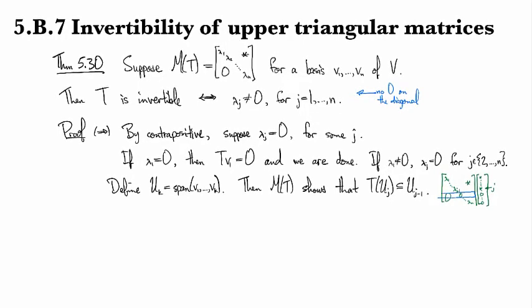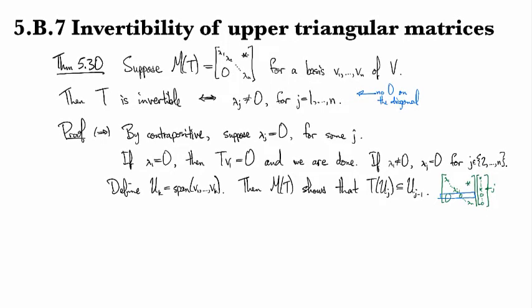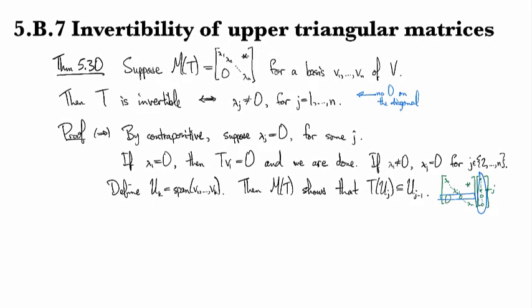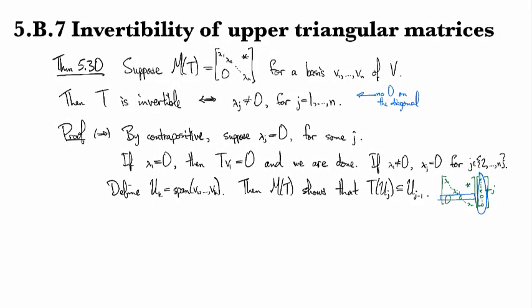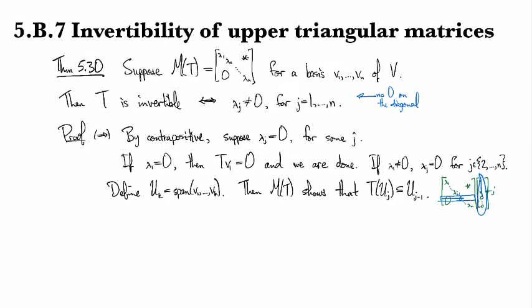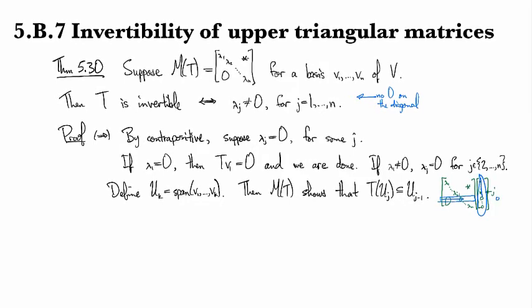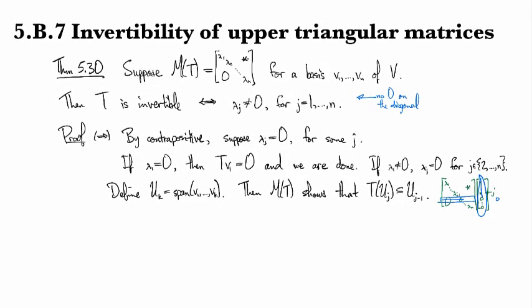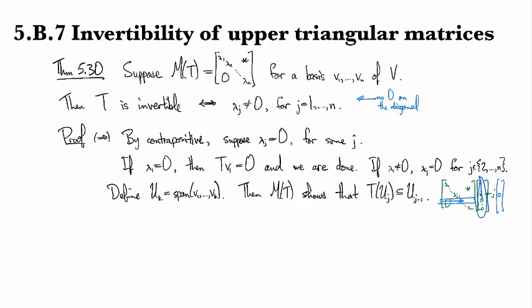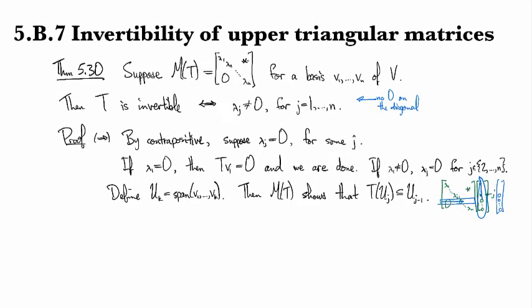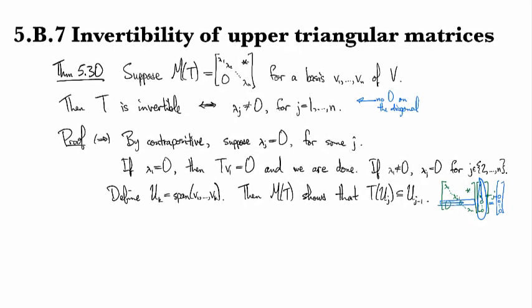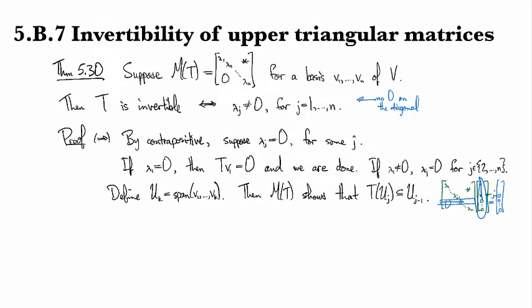Then when we do this product, because of this zero on the diagonal in the jth row, when it lines up with this column vector and we take the dot product, we're going to have j zeros that kill off the first coordinates and make sure we have a zero in the jth slot of the product. So it makes one more zero.